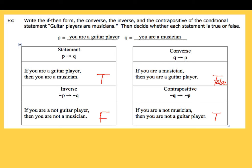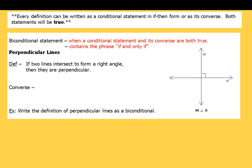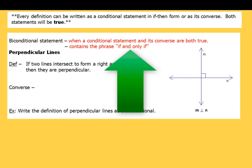Now let's take a look at the biconditional statement. Every definition can be written as a conditional statement in if-then form or as its converse, and both of these statements are true. The biconditional statement is when a conditional statement and its converse are both true. When you see a biconditional statement, you're going to have the phrase 'if and only if' within it.